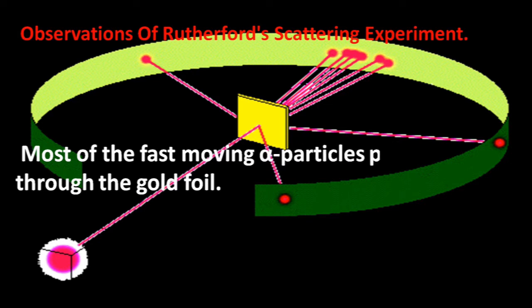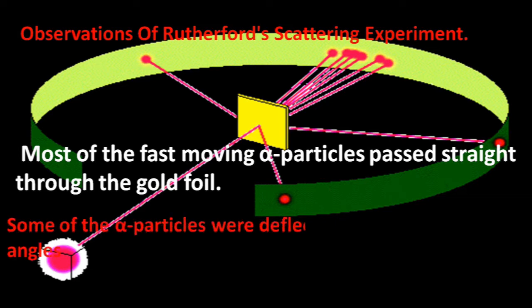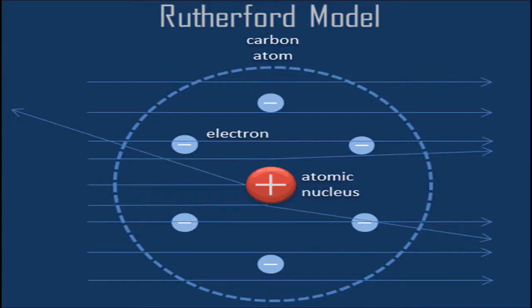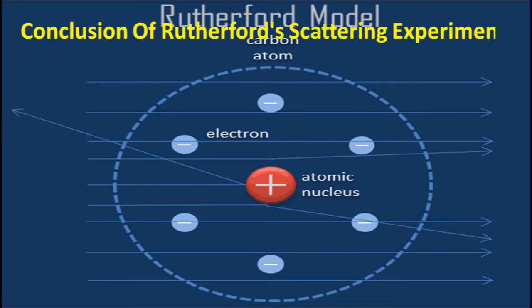Most of the fast-moving alpha particles passed straight through the gold foil. Some of the alpha particles were deflected by the foil by small angles, and some were deflected back by large angles.